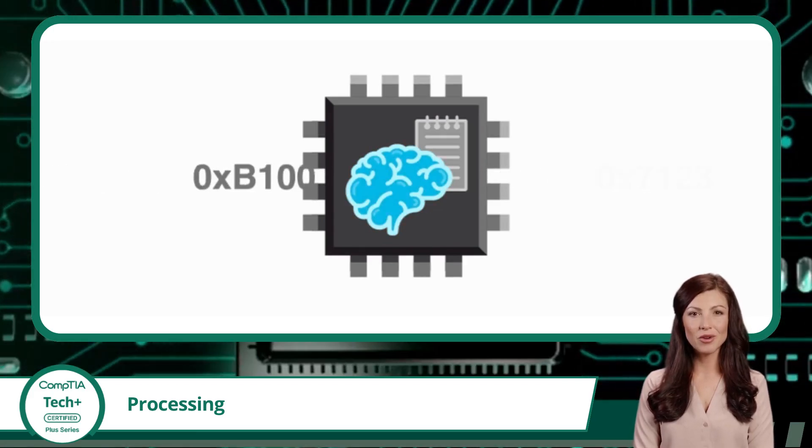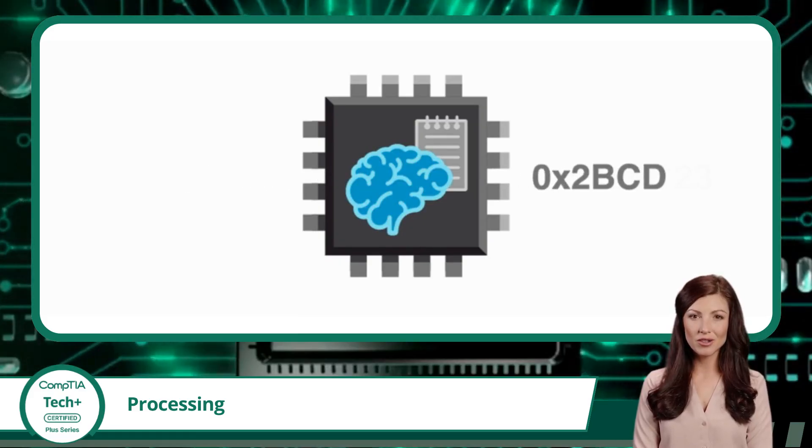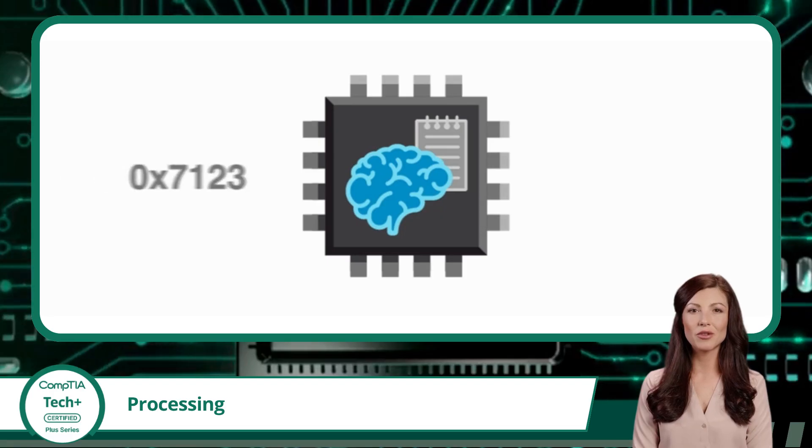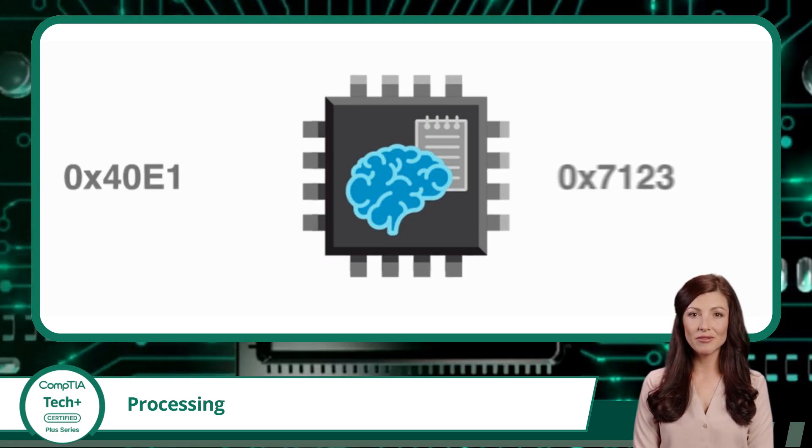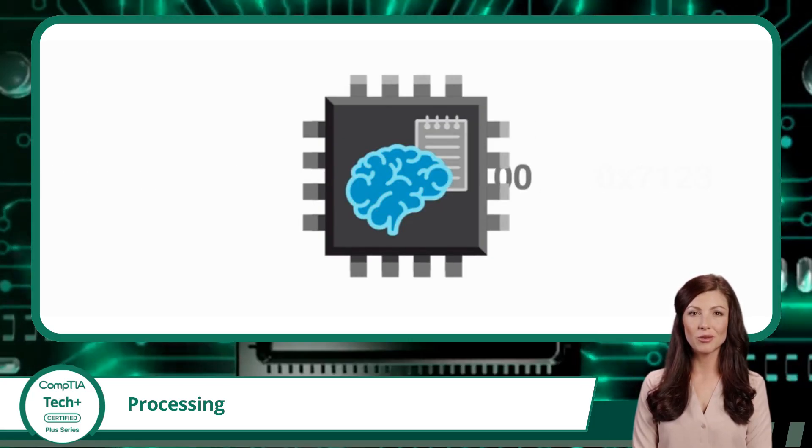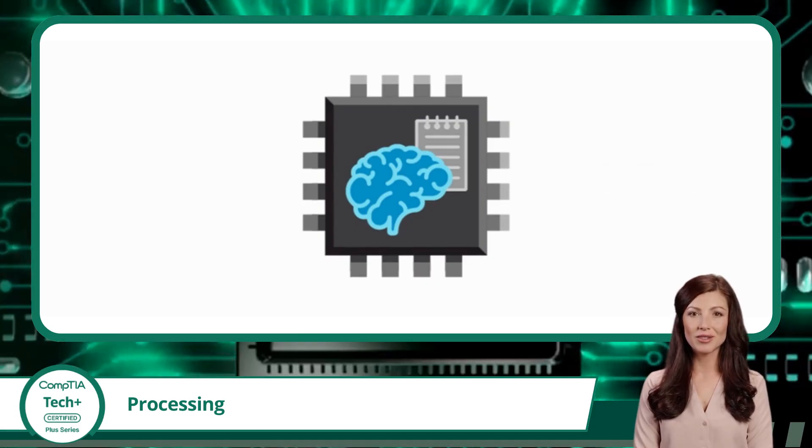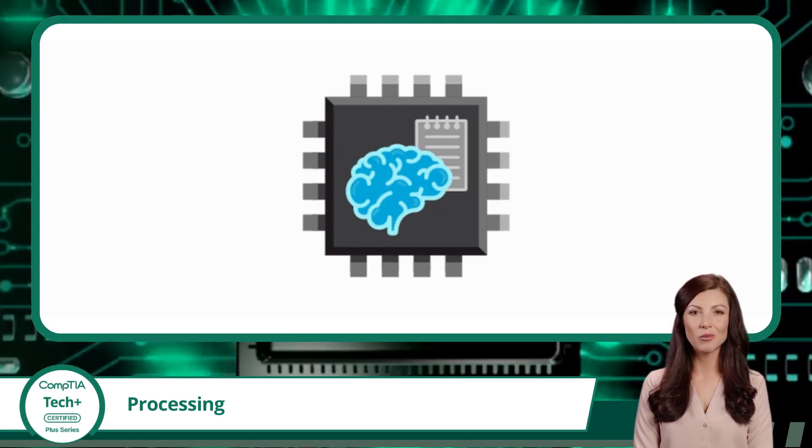This cycle, taking an input, manipulating it during processing, and sending it to output or storage, is the heartbeat of how all computers function. So whenever you're using a device to check email, edit photos, or even play music, just know there's a lot of behind-the-scenes processing happening in the background, making sure everything runs smoothly and the data ends up exactly where it needs to be.